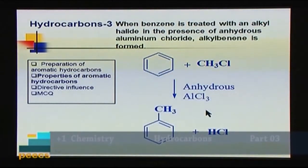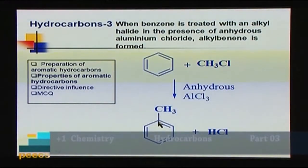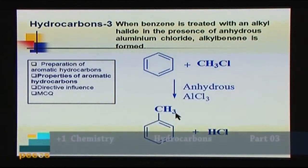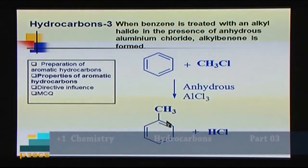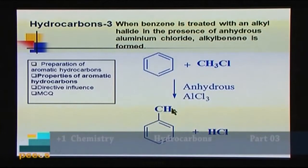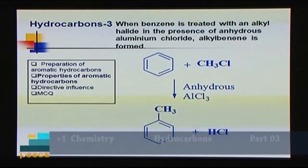The next reaction is Friedel-Crafts alkylation, where benzene is treated with an alkyl halide in the presence of anhydrous aluminum chloride as catalyst. Hydrogen is substituted by the alkyl group. When benzene reacts with methyl chloride, the product is methylbenzene (toluene). When benzene reacts with ethyl chloride (C₂H₅Cl), hydrogen is substituted by the ethyl group and the product is ethylbenzene.